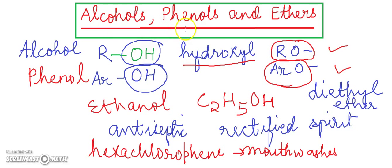Alcohols and phenols have the hydroxyl group as a functional group. Ethers have R-O or Ar-O as the functional group. When the hydroxyl group is attached with the alkyl substituent, then it is known as the alcohol.